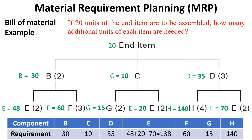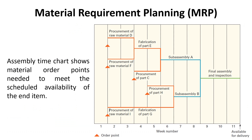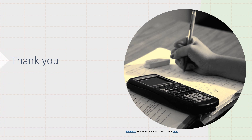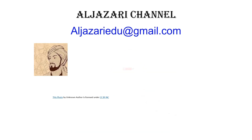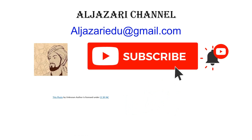Now we have learned how to obtain the required number of items to assemble a certain number of end items, knowing the product structure tree and the quantity on hand from each item in the inventory record. The next step to develop the Material Requirement Planning MRP is to construct the assembly time chart to show material order points needed to meet the scheduled availability of the end item. This step will be discussed in the next video. Thanks for watching — if you liked this video, press like and share it, and do not forget to subscribe to the channel and activate the alarm to be notified of new videos.